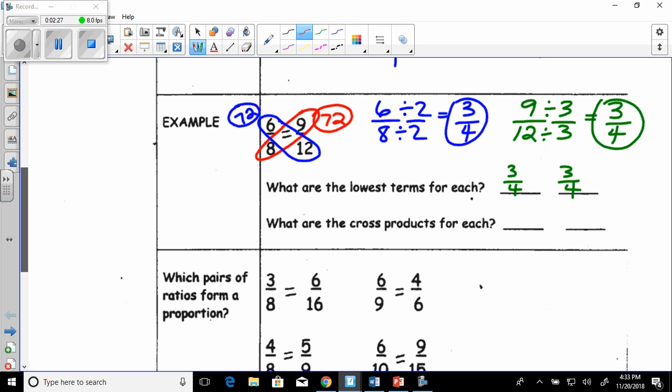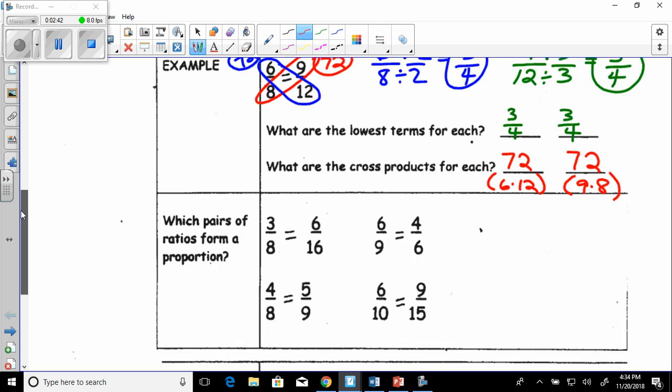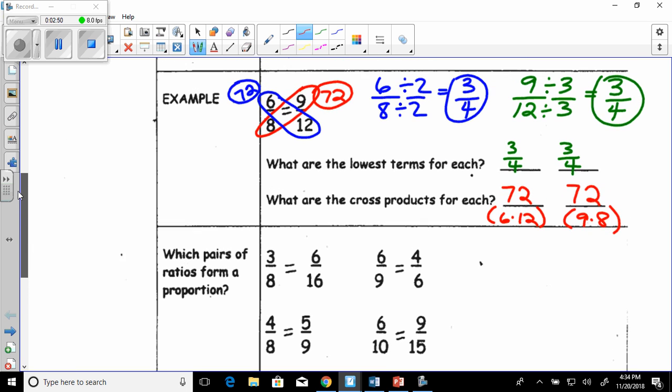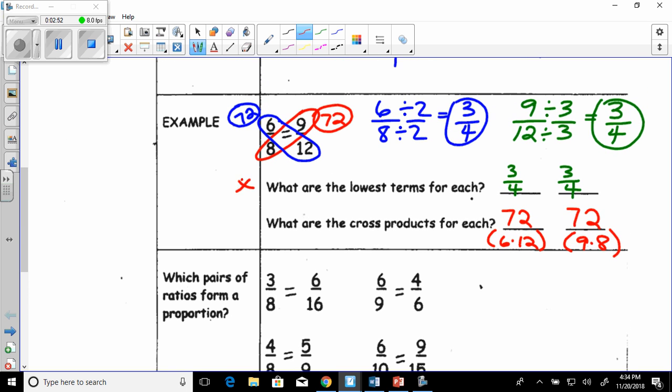So what I would write down here is the cross products are 72. How did I get 72? 6 times 12. And I multiplied 9 times 8. So what you will need to do down here at the bottom is you want to find out which pairs of ratios form a proportion. So going back up here, you can reduce them to lowest terms or you can use the cross products.